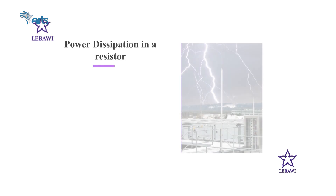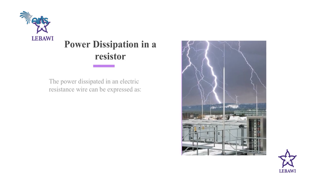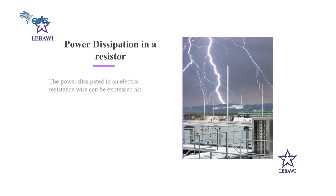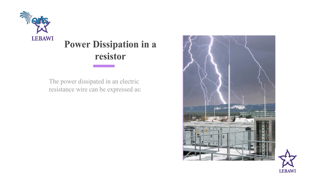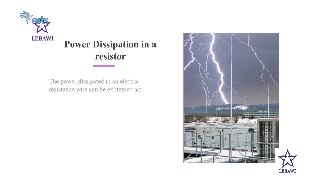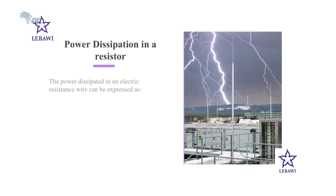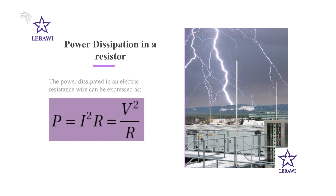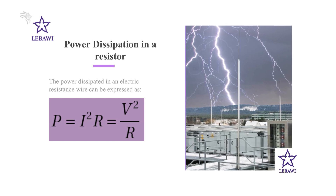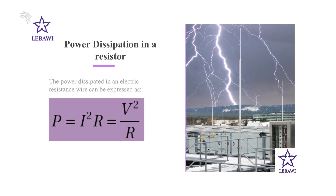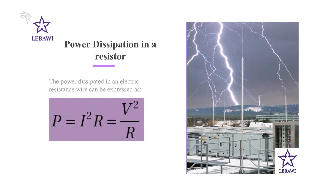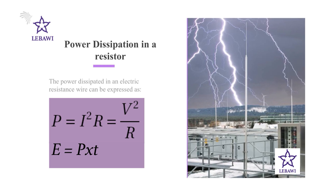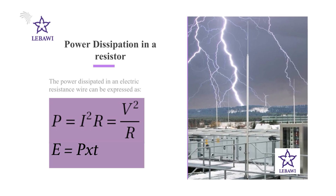Now let's see how much energy is converted from electrical to heat energy when a current I passes through a conductor of resistance R. With the help of Ohm's law, the power dissipated in an electric resistance wire can be expressed as: power is equal to current squared times resistance, which is equivalent to voltage squared divided by resistance. Hence, the total amount of energy converted from electrical to heat energy can be determined by multiplying the power dissipated by the time the current takes to pass through the conductor.